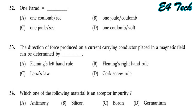The first question: 1F is equal to CV. Therefore, C is equal to Q by V, that is Coulomb per volt. That is, 1F is equal to 1 Coulomb per volt. Option D.